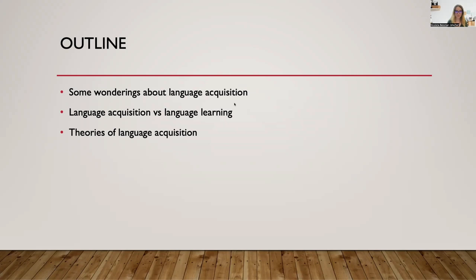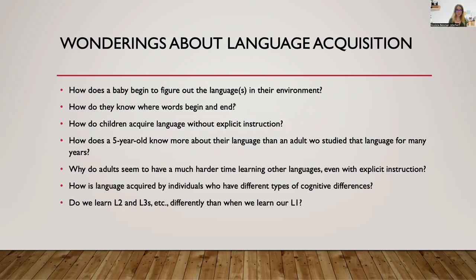There's a lot more about this in the reading that you'll have to do for this module. So here are some wonderings about language acquisition, and you might have other wonderings and curiosities as well. One is: how does a baby learn and figure out what the languages are in their environment? How do they know where one word ends and where another one begins? How do they acquire the meanings of words and all of those different subcomponents of language?